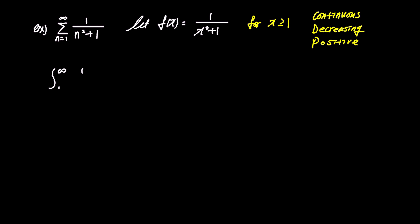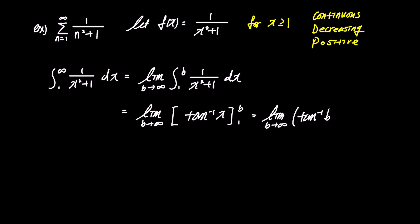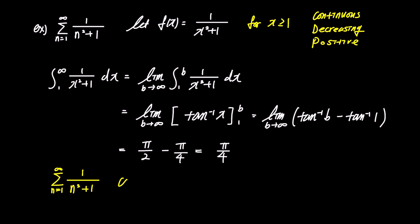For the improper integration of 1 over x squared plus 1, using the limit, we get the limit of the integral of 1 over x squared plus 1 from 1 to b as b approaches infinity. The integral of 1 over x squared plus 1 is the inverse tangent, so we write it as the limit of arctangent as b approaches infinity. Substituting b and 1, we get arctangent(b) minus arctangent(1), and as b approaches infinity, this becomes pi over 2 minus pi over 4, ultimately resulting in pi over 4. Since the integral test yields a finite value, the sum of 1 over n squared plus 1 as n goes from 1 to infinity also converges.